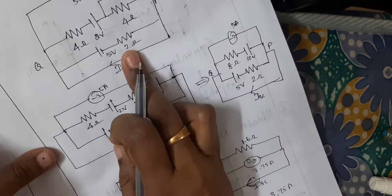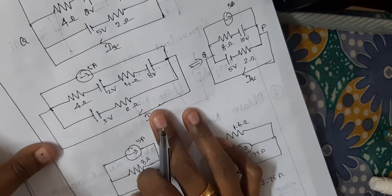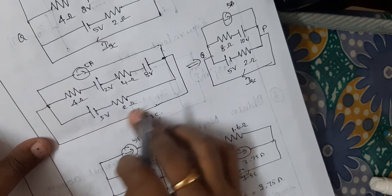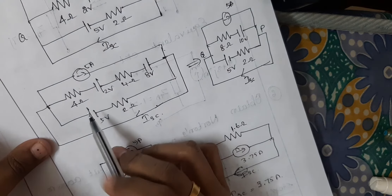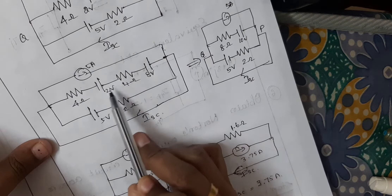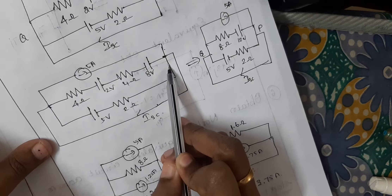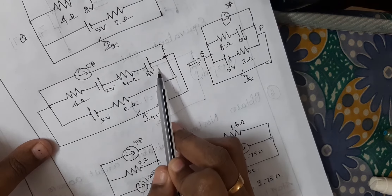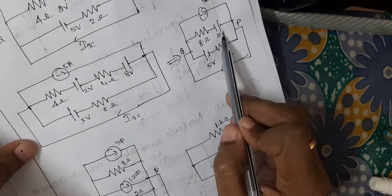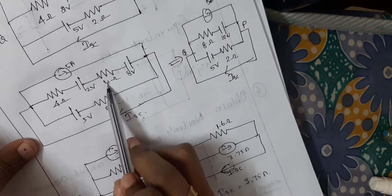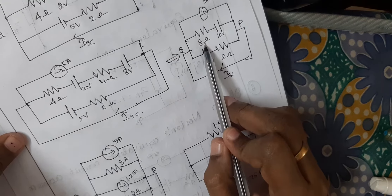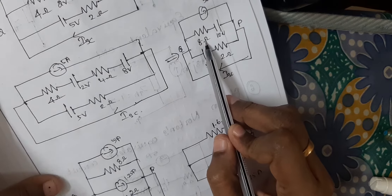Here 5V and 2 Ohm resistor. Now see the simplified diagram. Two voltage sources are in series — if two voltage sources are series you can add them, so it becomes 10V. And these two resistors are series, so you can add the resistors and it becomes 8 Ohms.